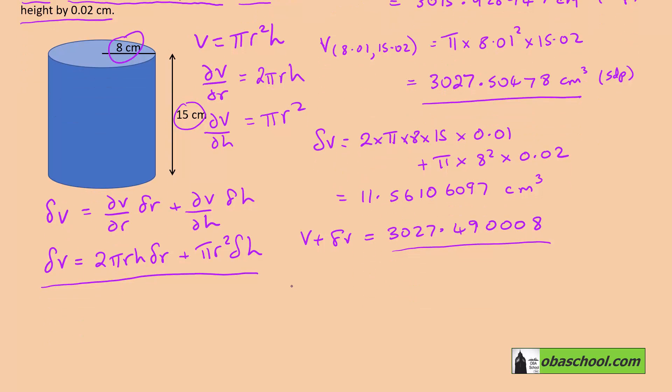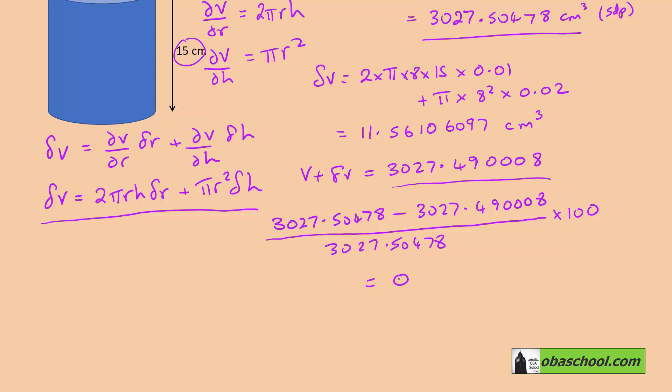Now, if we do the percentage difference there, we do 3027.50478 take away 3027.490008. We need to divide that by the true figure, which is 3027.50478. Multiply by a hundred to change it into a percentage. We find that that is 0.000049 percent error in the estimate.